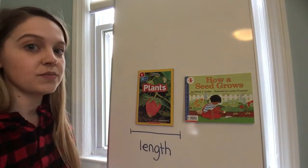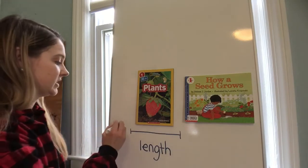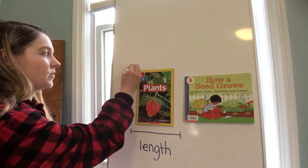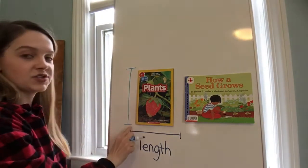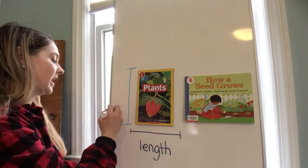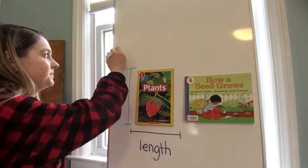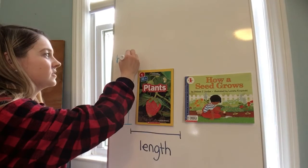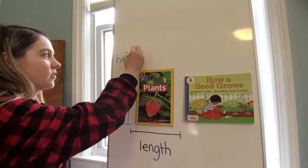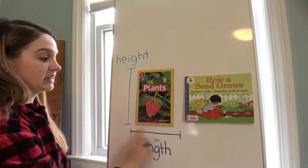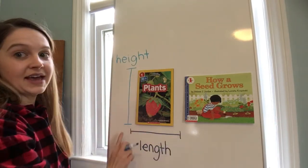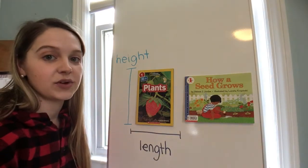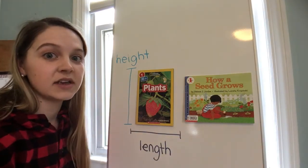We can also measure objects this direction, and when we measure this direction we call this height. So this week we're going to be measuring both the length and height of different objects that you can find around your house.